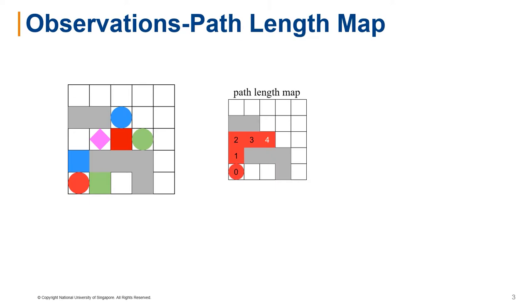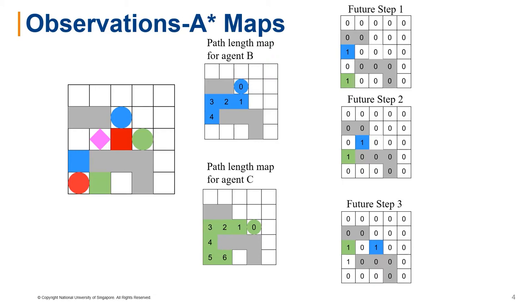We use standard single-agent A-Star to compute a pathless map for all the agents. The pathless map of agent A is used as the fifth layer of the observation. While the pathless map of B and C are decomposed into several layers of maps, indicating their optimal future actions, assuming that no one else is in the world.